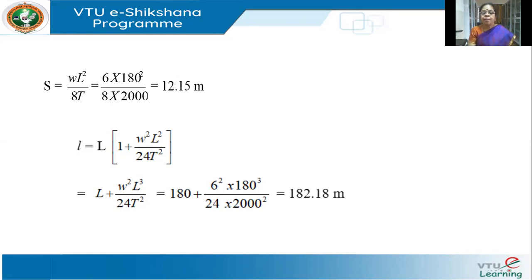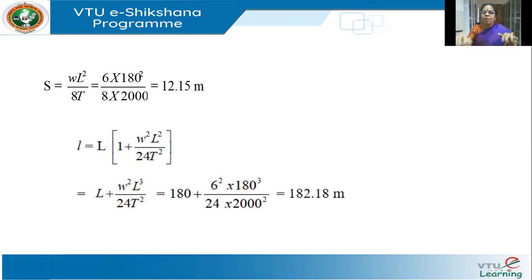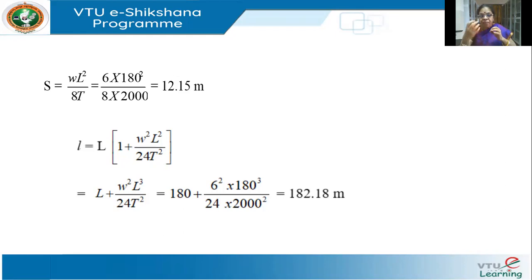From S = WL²/8T: SAG is proportional to the weight of the conductor — heavier conductors have more sag; proportional to the square of the span length — longer spans increase sag rapidly; and inversely proportional to tension — more tension means lesser sag, and a lower factor of safety means lesser sag.